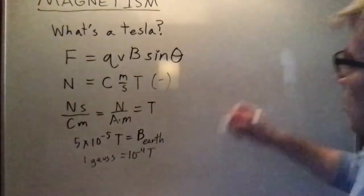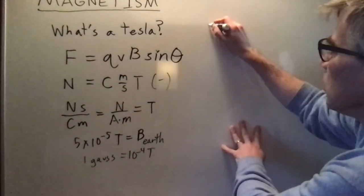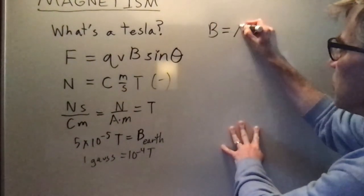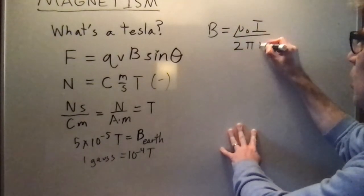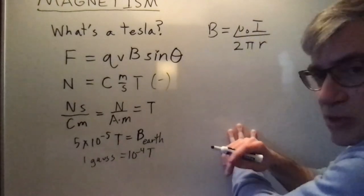One more related point. What's mu zero? We've got a formula like the magnetic field of a long straight wire, mu naught i over two pi r. Well let's follow the units.